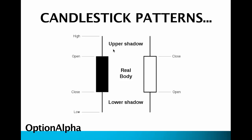These upper shadows or wicks on candlestick patterns signal the intraday highs and lows for the stock we're trading. If you see the upper shadow really high up, you can see that sometime during the day that security traded all the way up to that level and then came back down. The same goes for the low side — the stock traded all the way down intraday and then rallied away. You can see how this creates a lot of really good visual information for technical analysis traders.